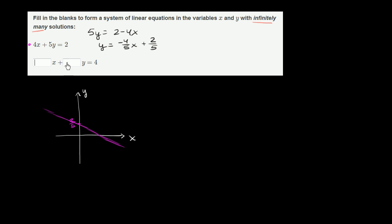We're going to get an infinite number of solutions for the system if the second line, when we graph it, is essentially the exact same line — it overlaps at every x and y that satisfies the first equation. The easiest way to think about what the blanks should be is: how do I fill them in so the second equation is really just a direct algebraic manipulation of the first equation?